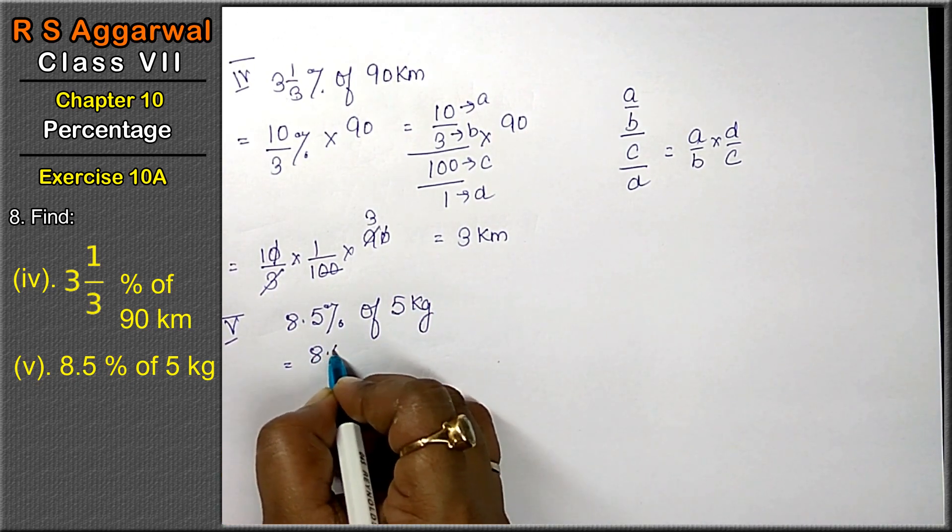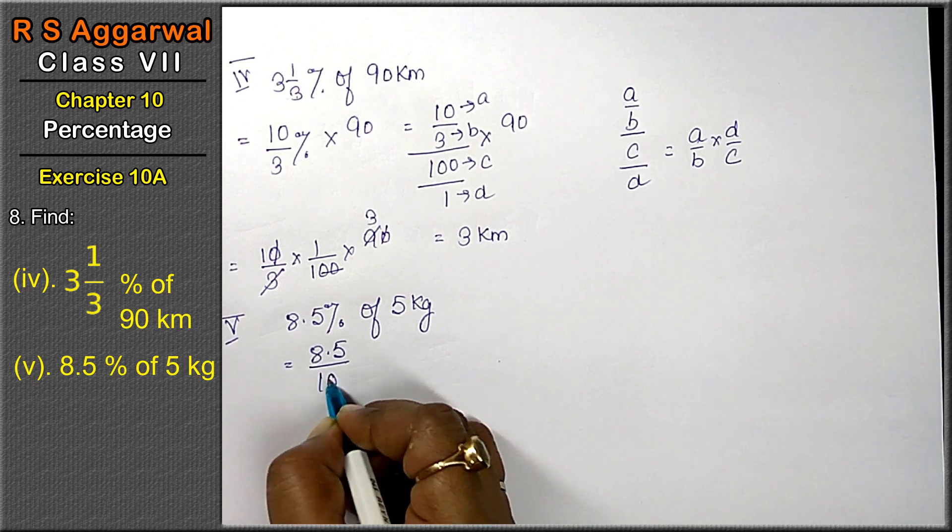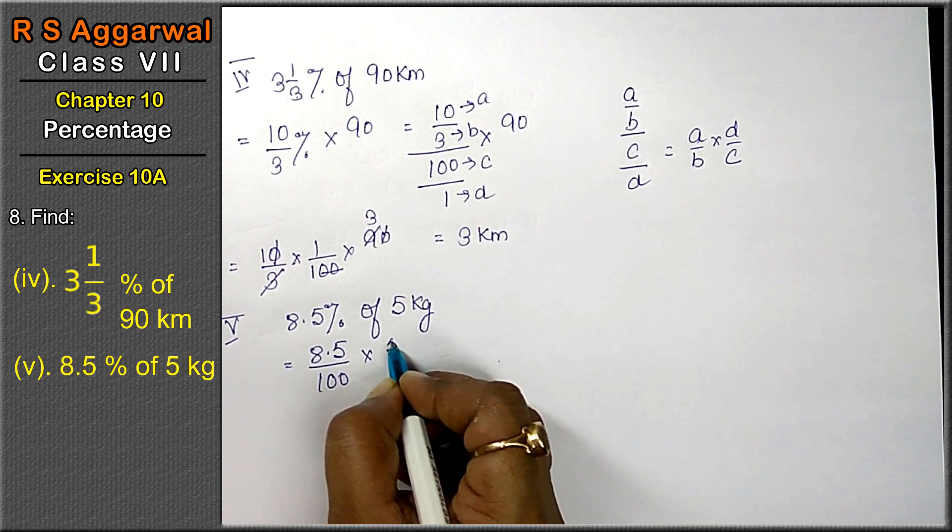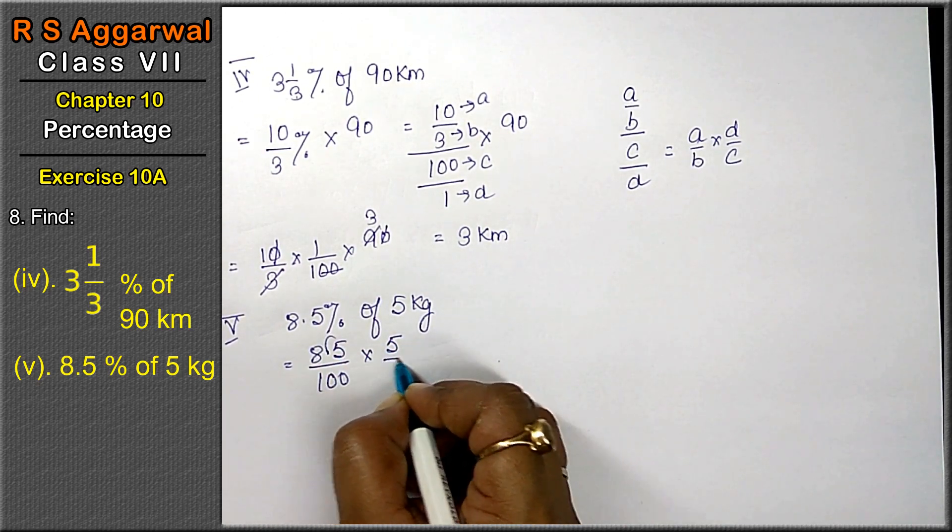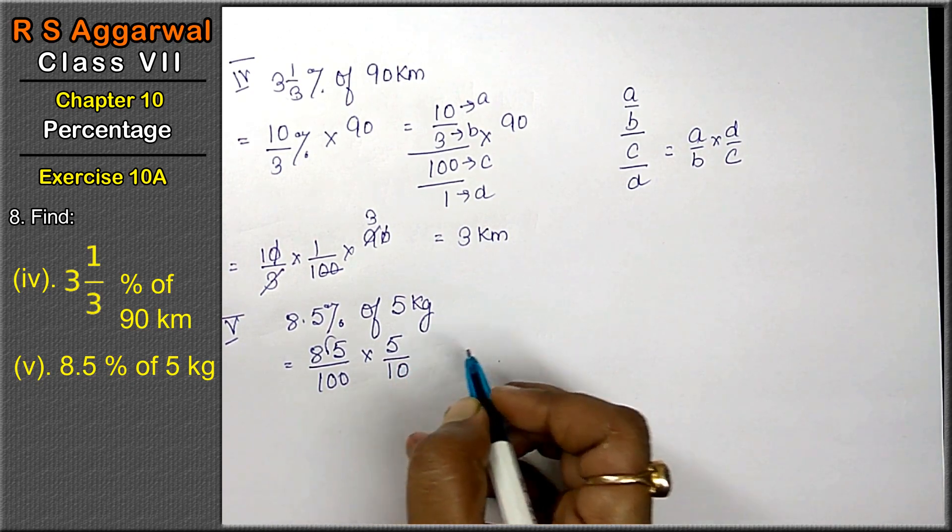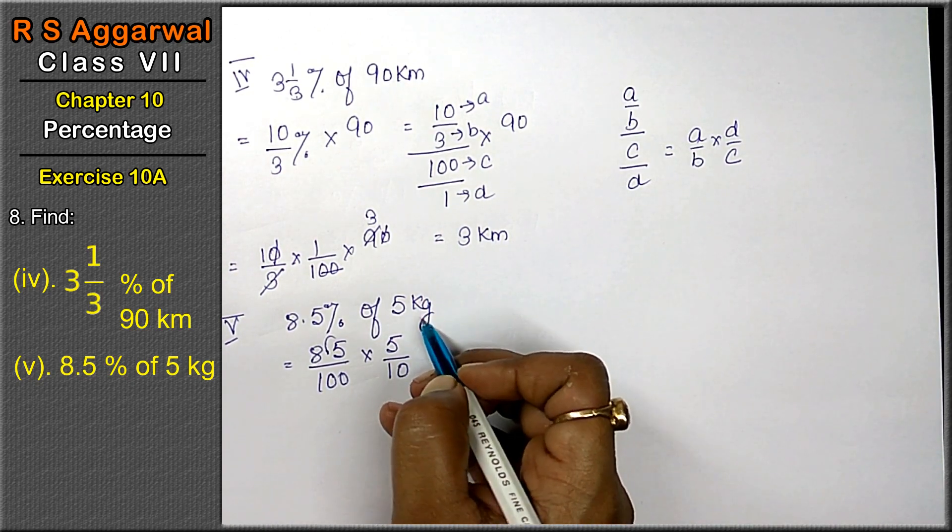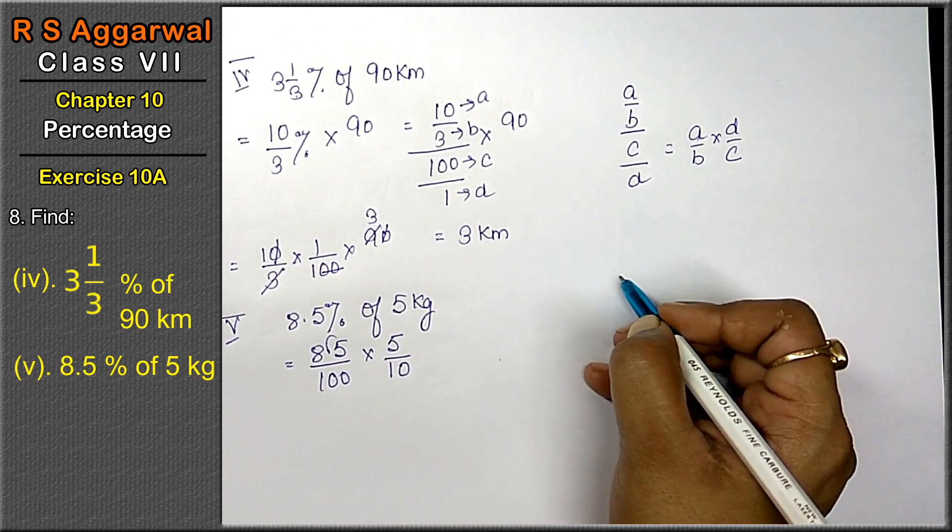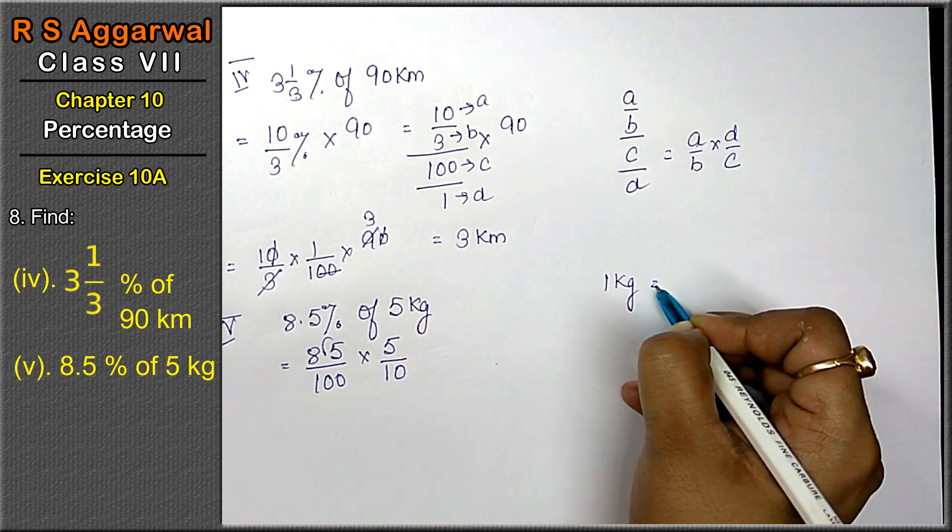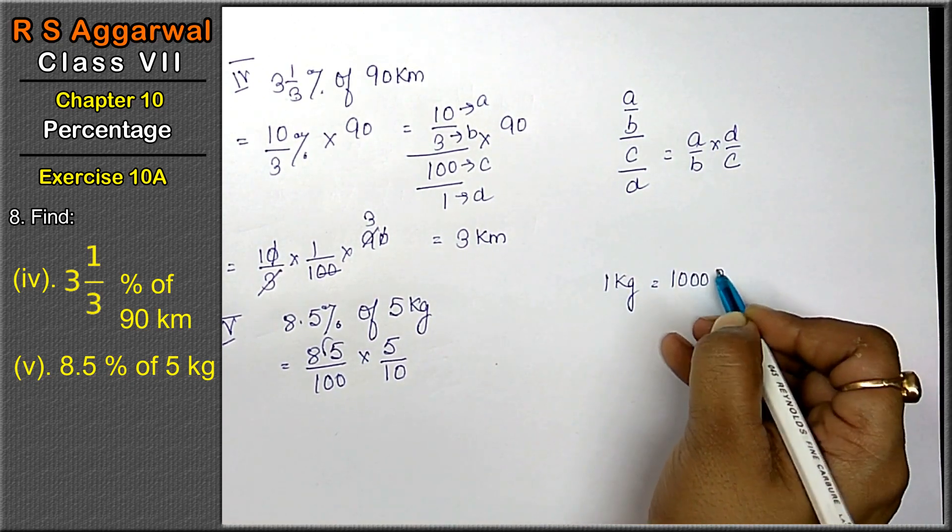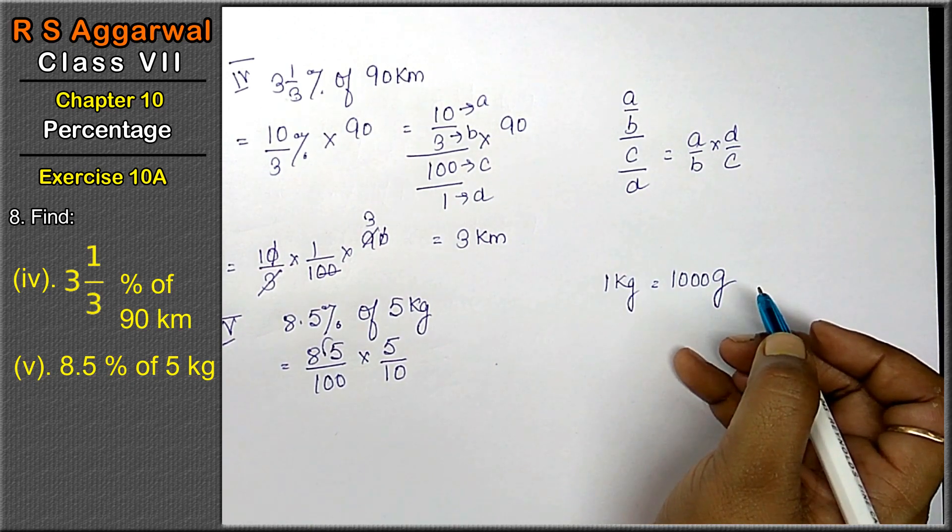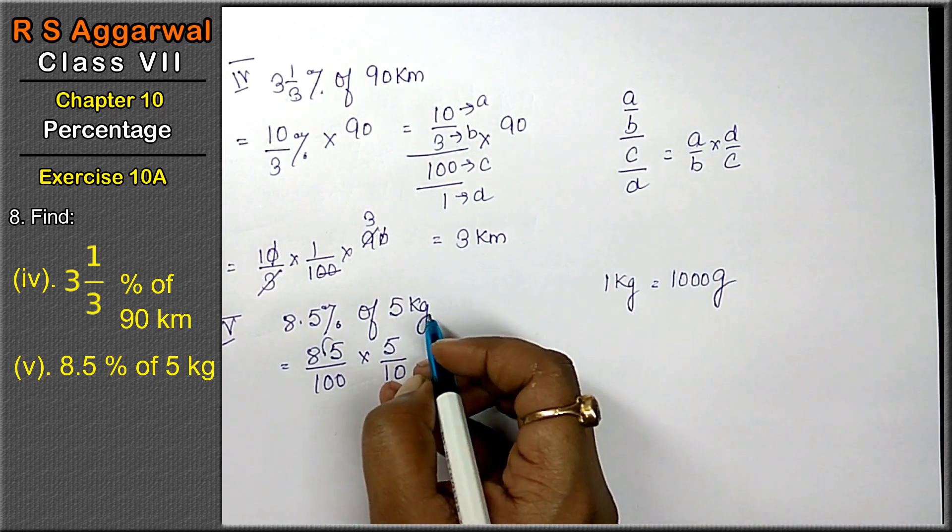8.5% means 8.5 upon 100 into 5 kg. When we remove the point, we divide by 10. Now kg is a very large unit. As we all know, 1 kg equals 1000 grams. If we want, we can change it to grams.